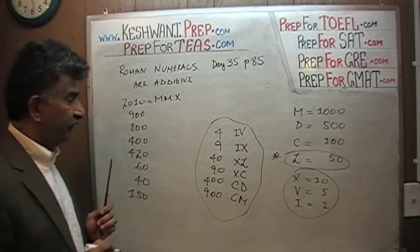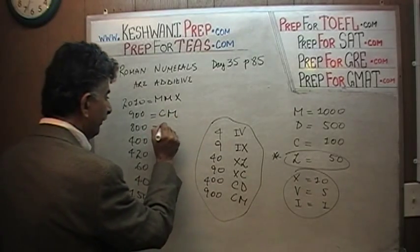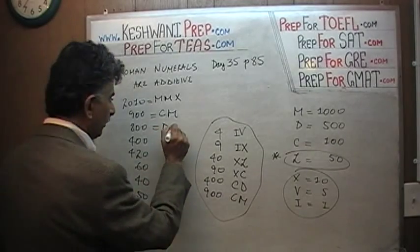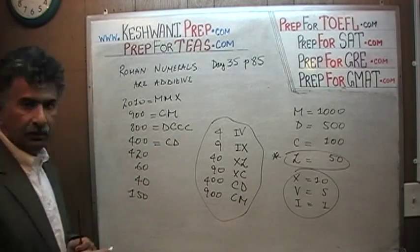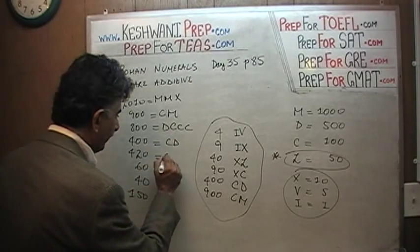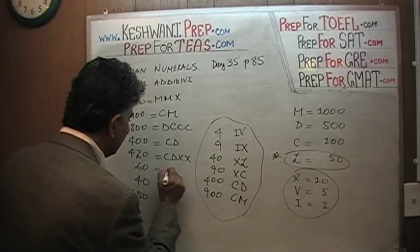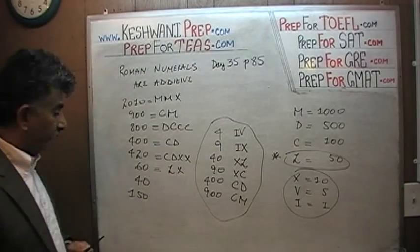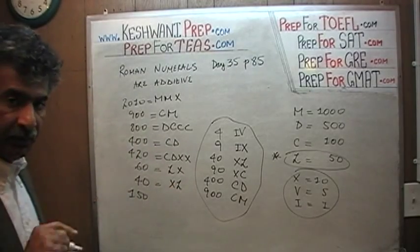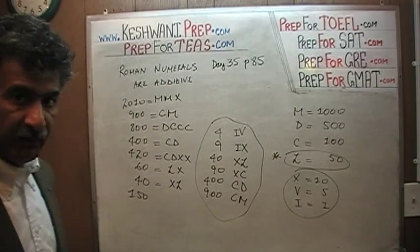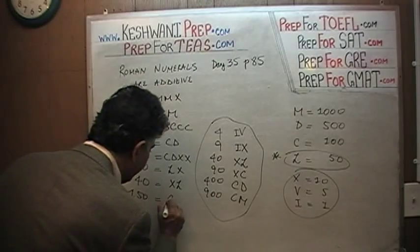400 would be your 500, take away 100. 420 is the same as 400 and then 20. 60 would be: write your 50, which is L, and add 10 to it. 40 would be: write your 50, and then 10 will be to the left of it because you're taking away 10. How do we write 150? 150 is easy — it's just 100 plus 50. 100 is C and 50 is L. That's all.